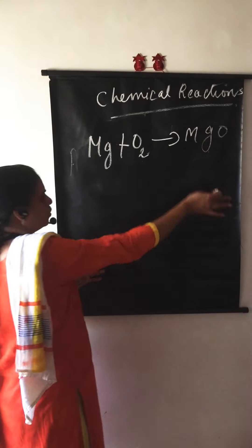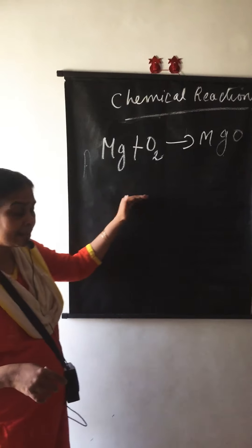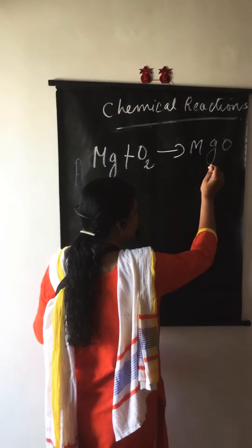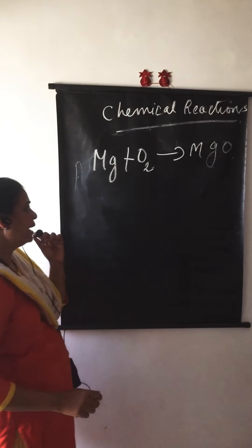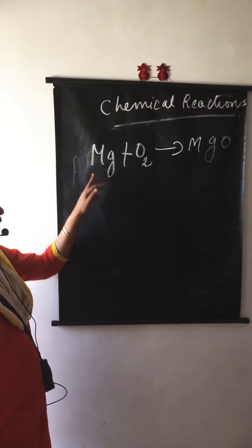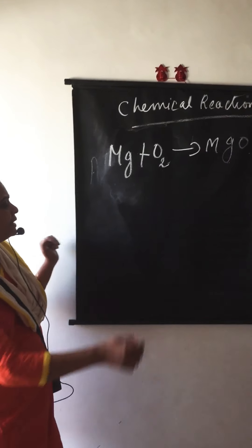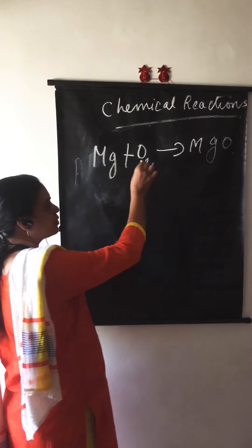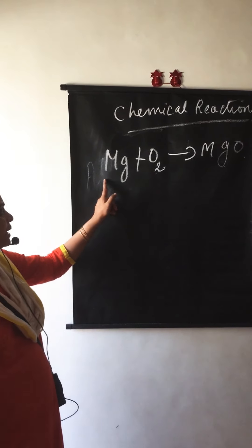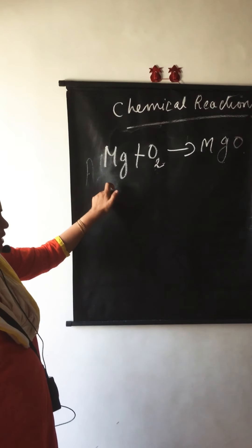Now let us write magnesium oxide. The valency of magnesium is 2 and oxygen is 2. When you write the element, magnesium is simply written as Mg, and oxygen is written as O2 because oxygen is a diatomic element, so 2 is written. Magnesium is a monoatomic element, so it is written as Mg.